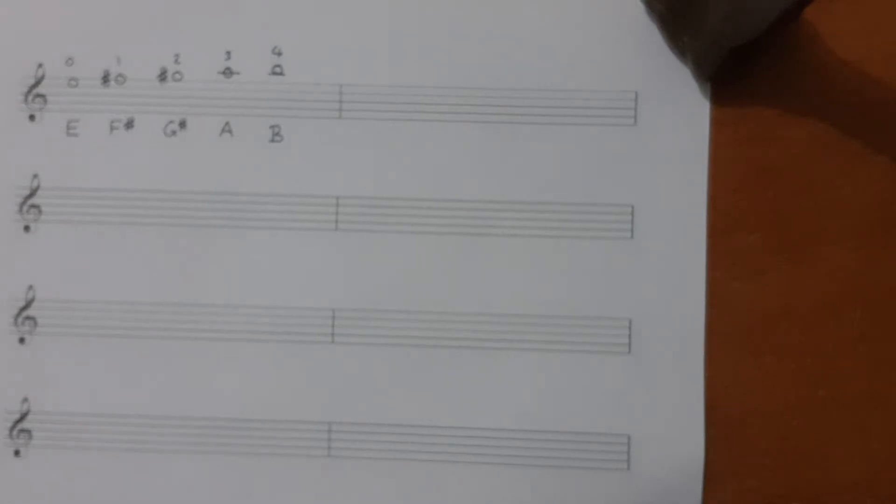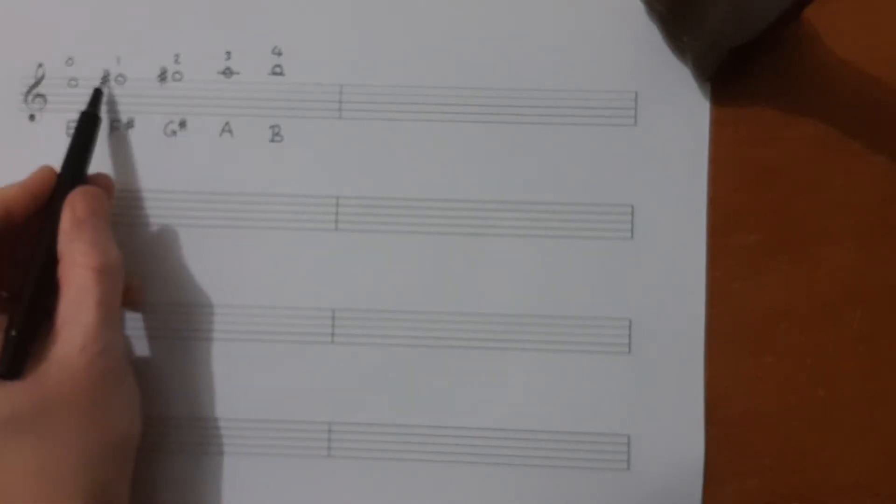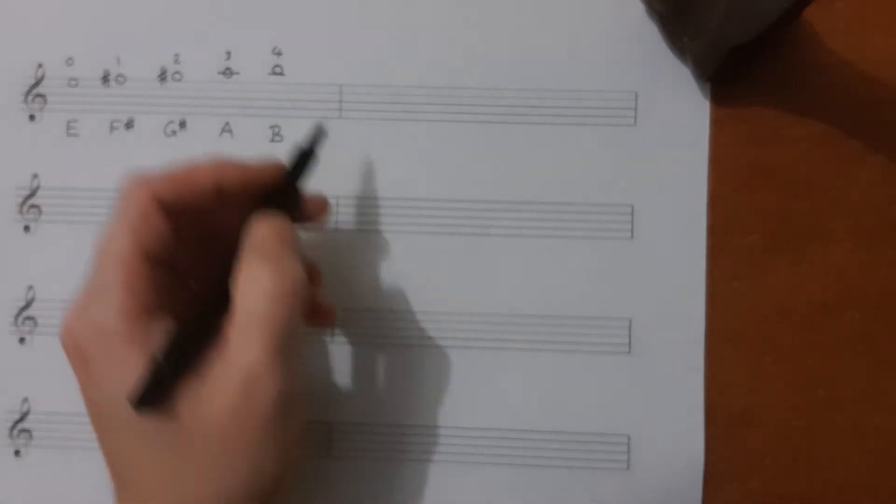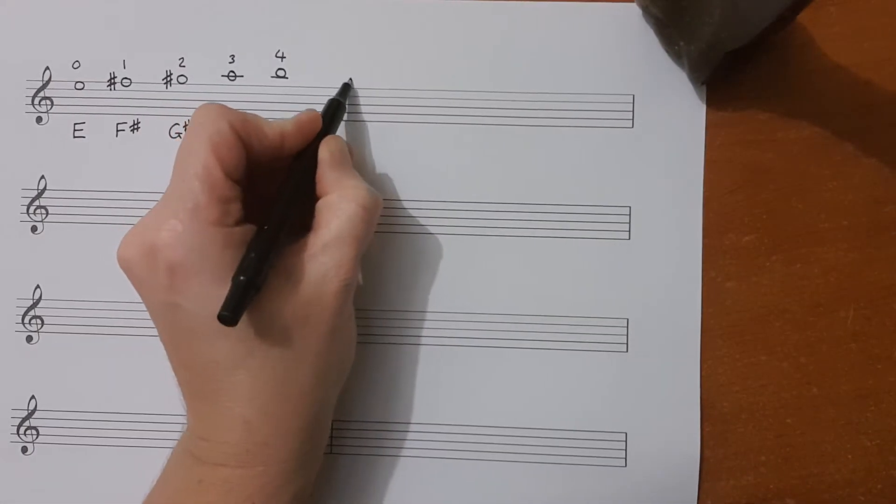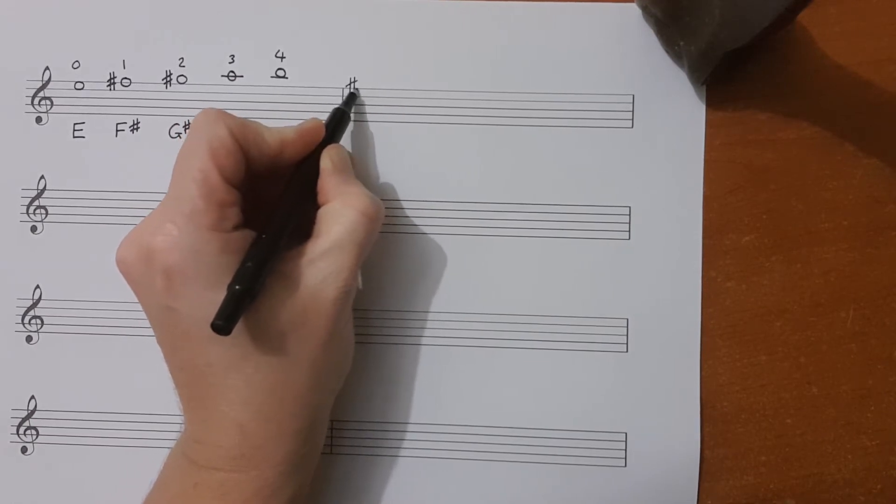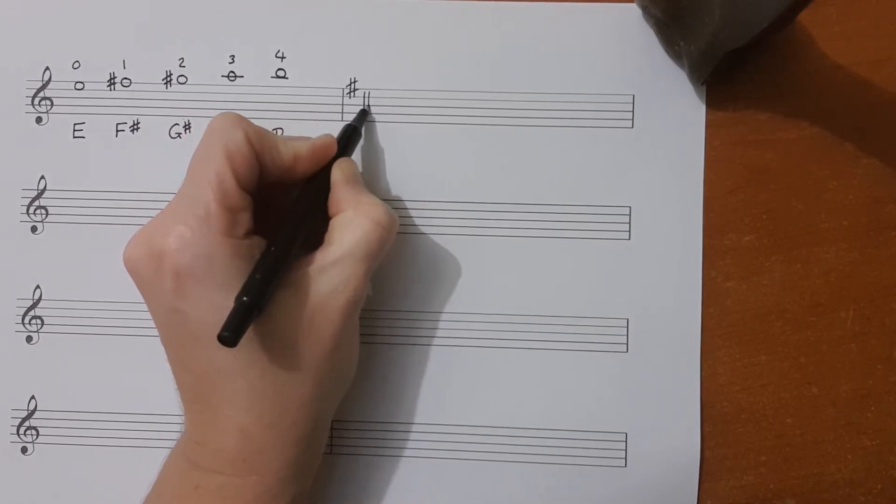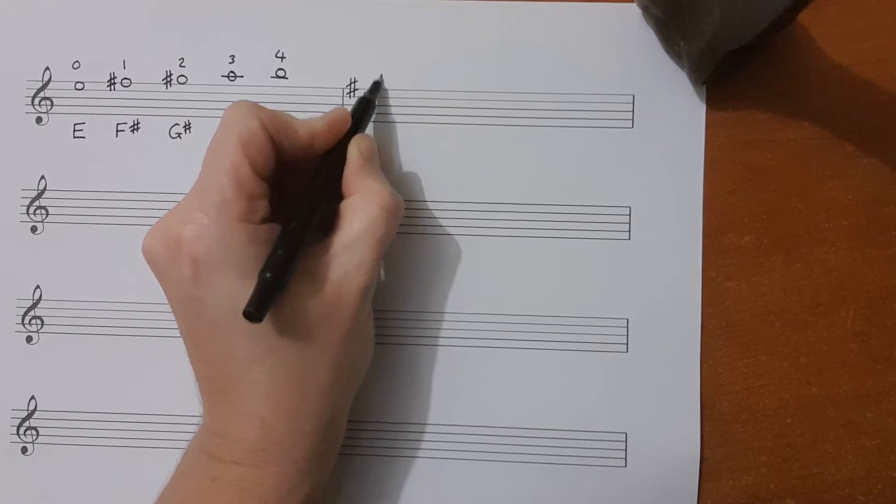Remember to pause the video at any point if you need some more time to write those notes down. These accidentals, these sharps are not always written in front of the note and often appear in the key signature. The key signature is always written in the same order. F sharp first, then C sharp and then G sharp.